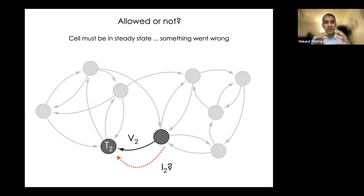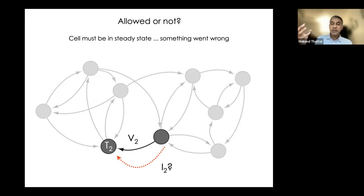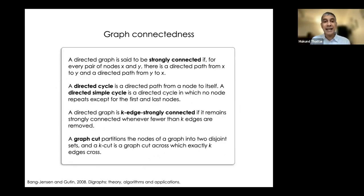This little game gives you a flavor of the kinds of issues that arise when you try to solve the global constraints of snare fusogenicity, vesicle binding, and recycling all at the same time. It's not easy, and you really don't want to do this kind of thing by hand. This is where the language of graph theory really comes into its own.